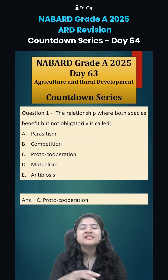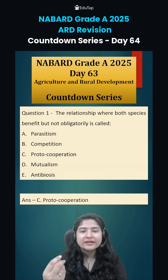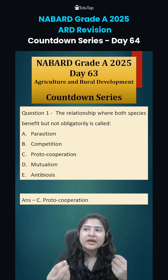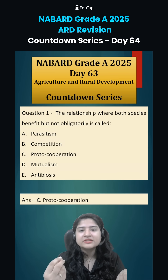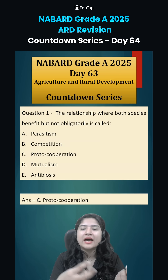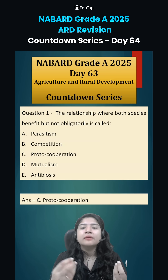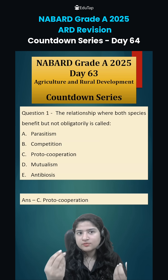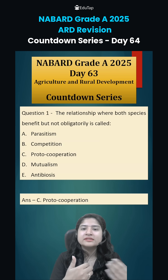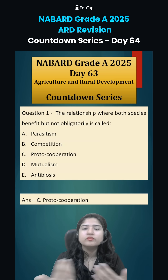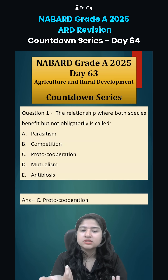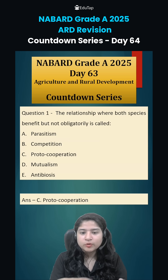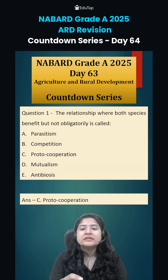An example of proto-cooperation is aphids and ants. Aphids provide honeydew to ants. Because aphids are very small in size, ants help them to move away in a much faster manner. So this is known as proto-cooperation.